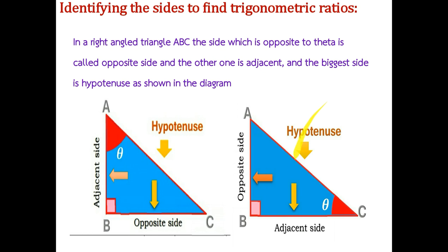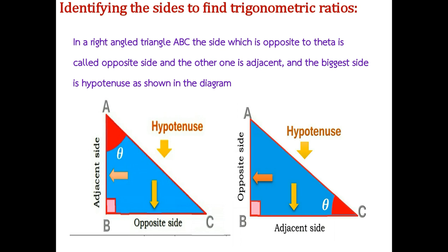Identifying the sides: To find the trigonometric ratios, we consider one reference angle as theta. The biggest side of the right angle triangle is the hypotenuse. The side opposite to angle theta is the opposite side, and the side adjacent to angle theta is the adjacent side. In triangle ABC, if angle A is theta, then BC is the opposite side, AB is the adjacent side, and AC is the hypotenuse.